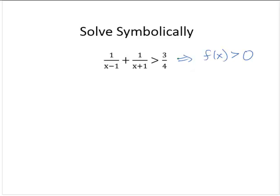So we need to bring that 3 fourths to the left and then rewrite it as—we want this f of x, we want it as a single fraction. In this case, since we're dealing with these rational expressions, we want to get this to a single fraction compared to 0.